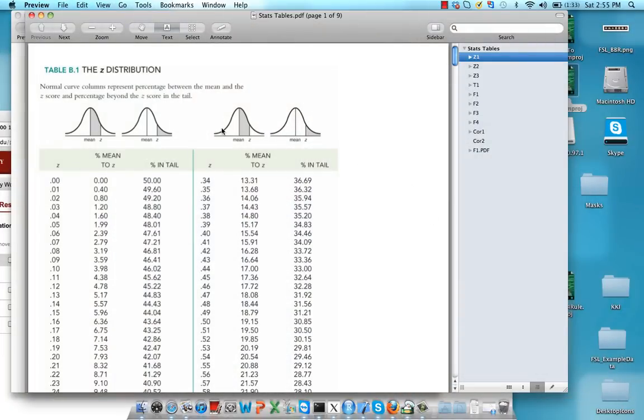The z-table looks like this. It gives you a z-score, and then the percent from the mean to z, and then the percent in the tail, which is simply 50 minus this column right here.